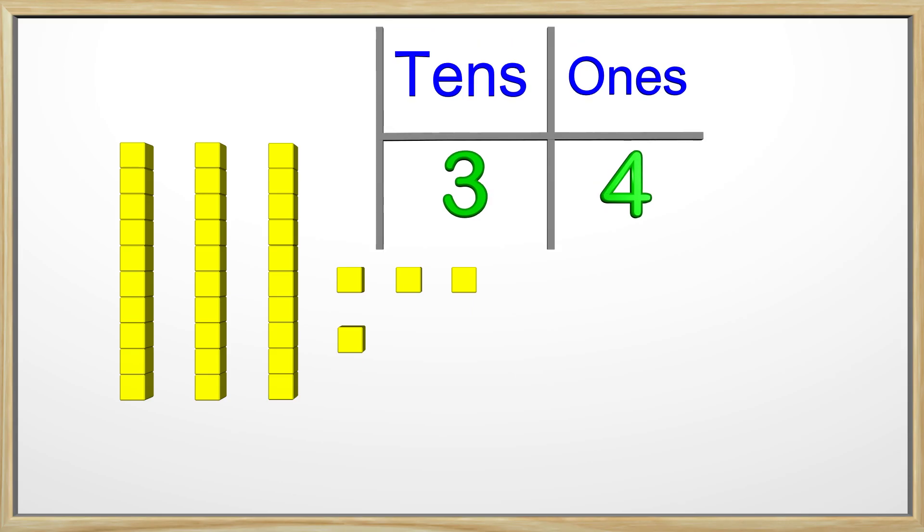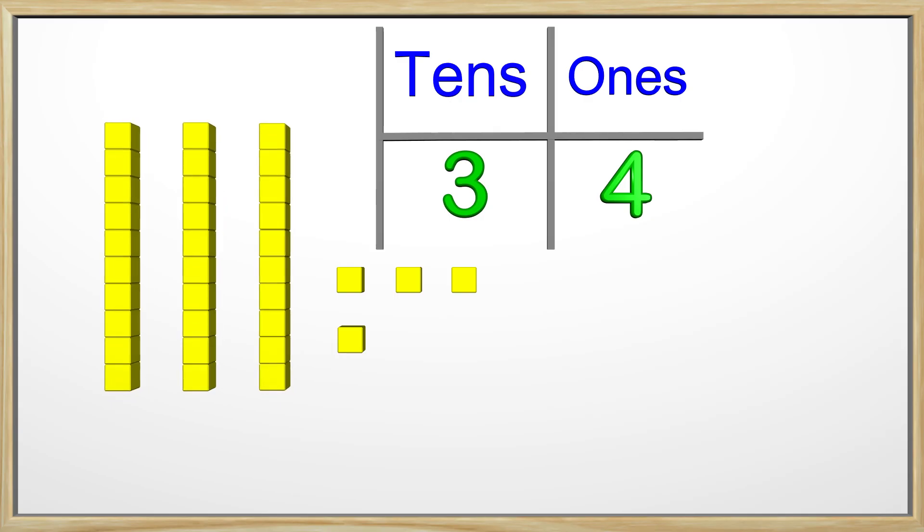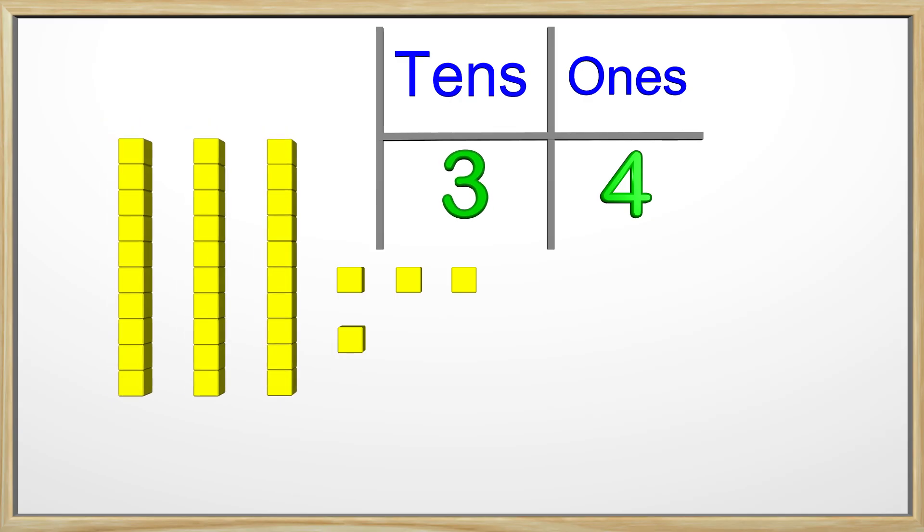Here is the number 34 and the 3 is in what we call the tens place. There are 3 tens blocks which represent the 3 in the tens place. The 4 is in the ones place. We have 4 ones blocks to represent the 4 in the ones place. This is place value. The tens place holds groups of tens and the ones place holds ones.